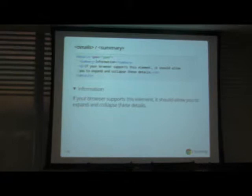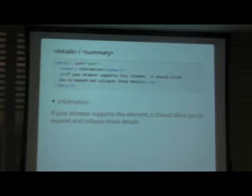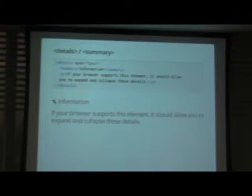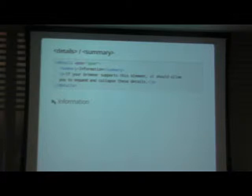The details element is a really neat one. It's kind of funky because it allows you to get that sort of open-and-close behavior really easily. You say details open equals open, provide a summary and then some content, and you end up with a collapsible element. If you wanted to do this in the past, you had to depend on some kind of library or write it yourself in JavaScript — hiding an element when you click, showing it when you don't. Now all that is built into HTML as an element.